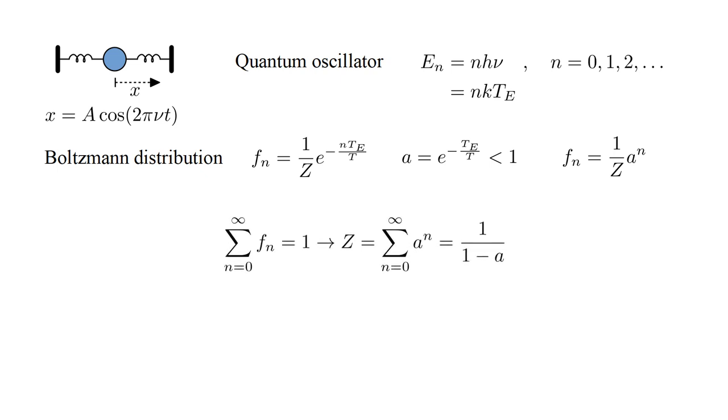The occupation frequencies have to sum to one, because the probability that the oscillator has any possible energy is one hundred percent. This requires the normalizing factor Z, the so-called partition function, to equal the sum from n equals zero to infinity of a to the n. This sum evaluates to one over one minus a.